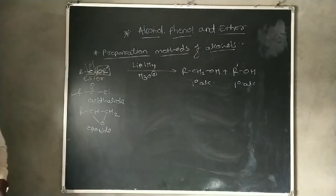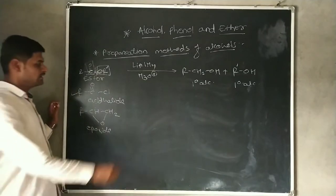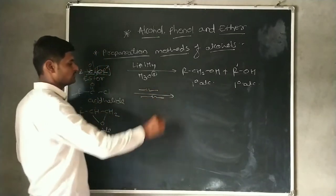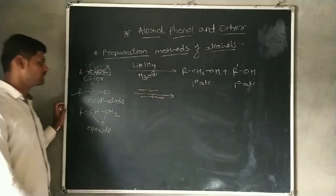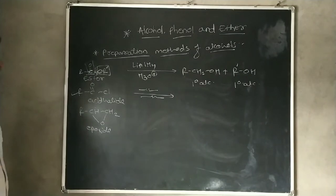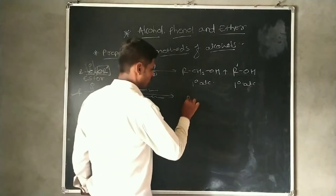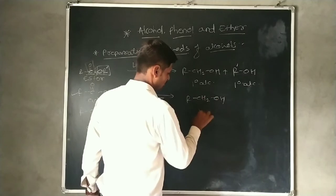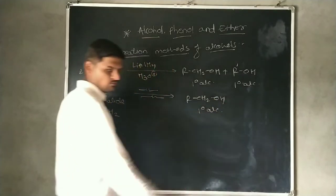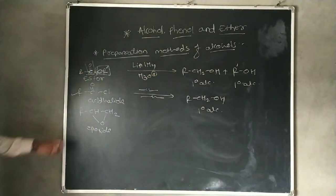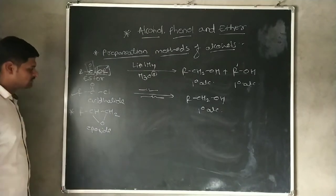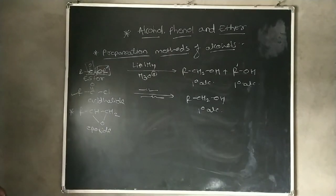In the case of acyl halide, it undergoes reduction reaction by using lithium aluminium hydride with acidic hydrolysis, and there is a formation of a primary alcohol — specifically a CH₂OH group.